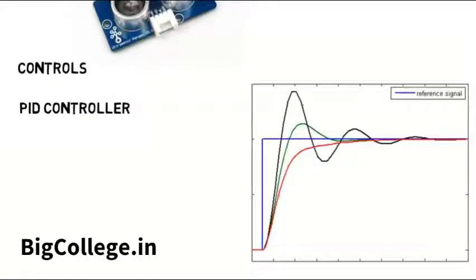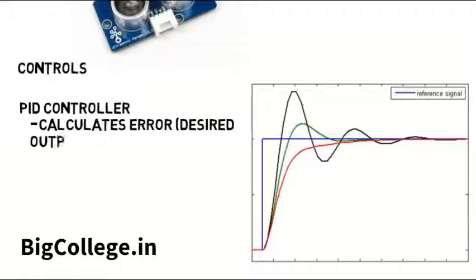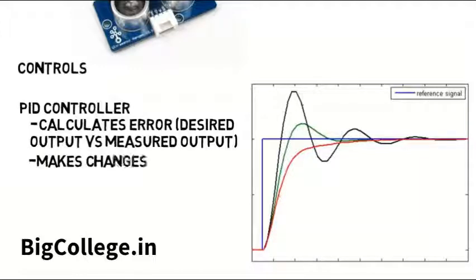This is something you will likely learn when you take controls. This is a control system that calculates error from what you want to be the output versus what is actually measured at the output, and then it makes changes to lower that error.